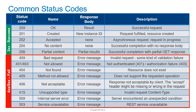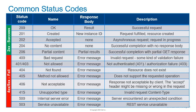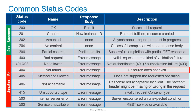Codes in the 400 and 500 area mean a failed operation. For example, 401 or 403 if there is an issue with authentication, or 404 when a requested resource does not exist. If you need more information, please refer to the PowerStore REST API developer's guide.